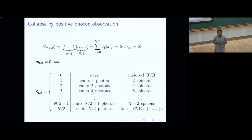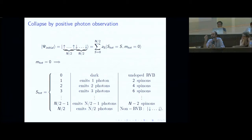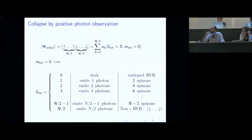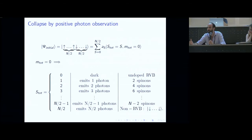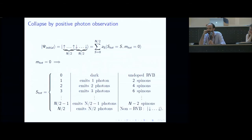Question: can't this measurement be presented as applying powers of J_minus — the J-minus operator? Yes, precisely. The spin-on state for example is J_minus squared applied to your state.